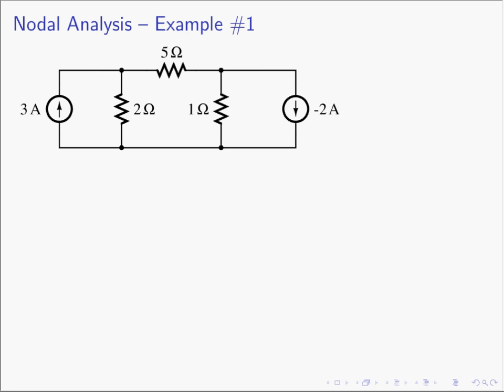Here's the first circuit we're going to solve. Step one: determine the number of nodes. Using colored markers, we can start coloring the nodes — there's one node, here's a second node, and we can form a third node. So how many nodes do we have? Obviously three. I like to write that in the corner: n equals 3. So I know I'm going to expect two equations and two unknowns.